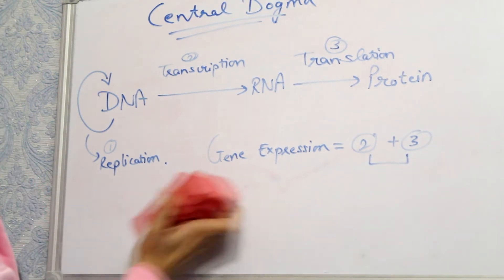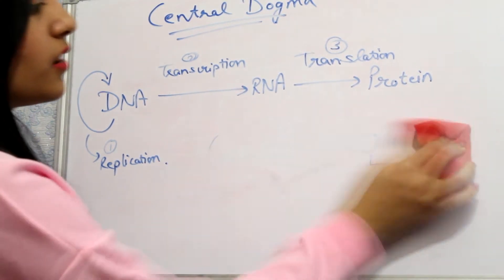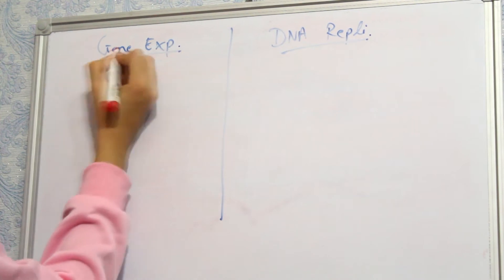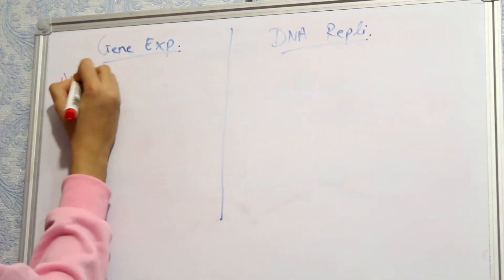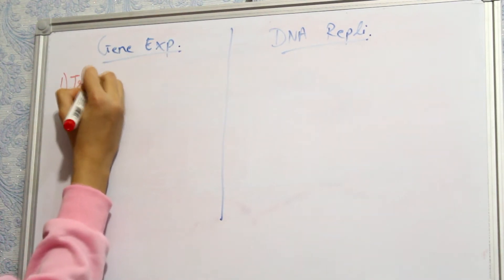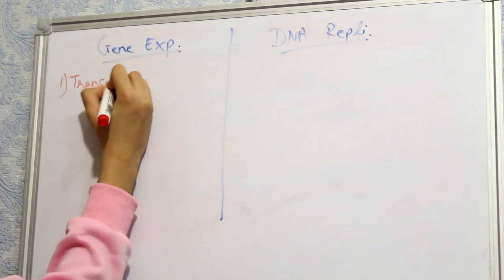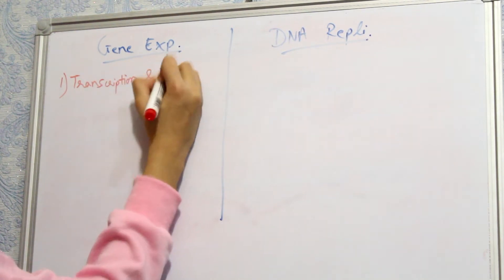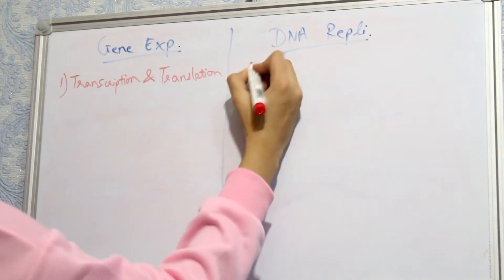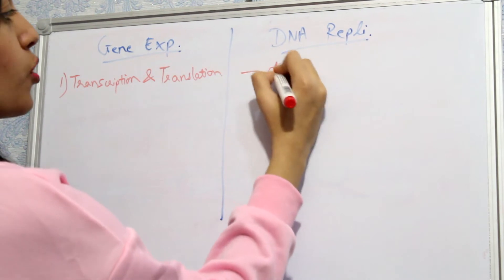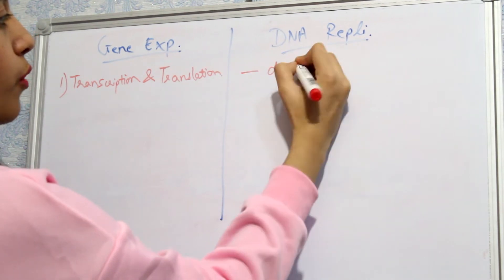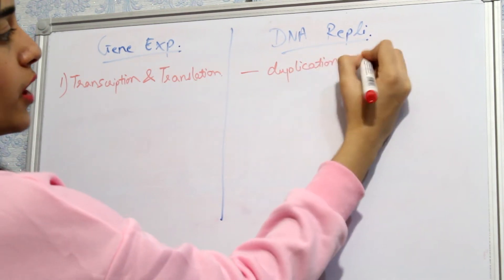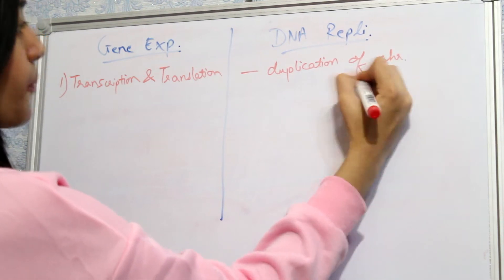If we compare gene expression with DNA replication, the first point is that gene expression includes transcription and translation, whereas DNA replication is simply the duplication of DNA, or we can say duplication of chromosomes.